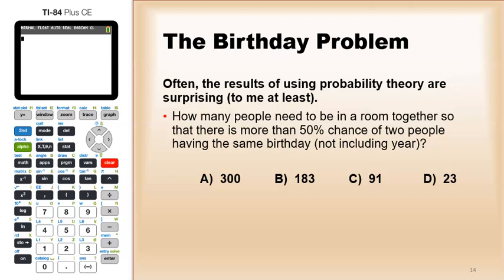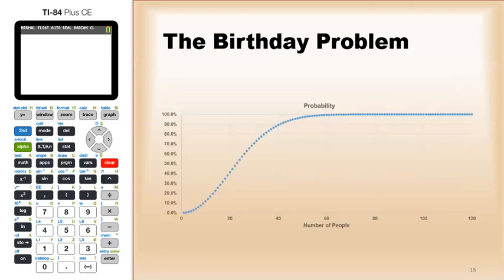Well, the answer is 23. How do I get that? Well, I'm not going to go through the calculations, but here's a graph of the probabilities for different numbers of people. You see at the very beginning, if there's zero people in the room or very few, the probability is about zero.